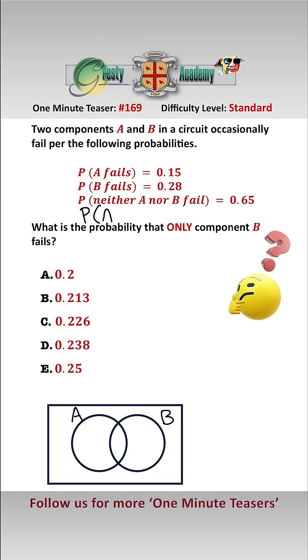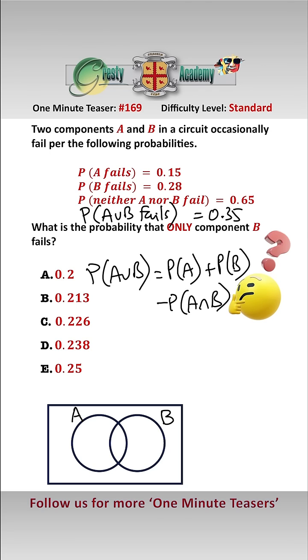So the probability that A or B fails is equal to 1 minus 0.65, which is 0.35. Then using the probability formula, P(A or B fails) equals P(A fails) add P(B fails) minus P(A and B fail), we get...